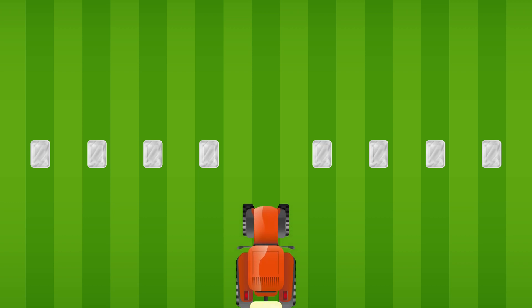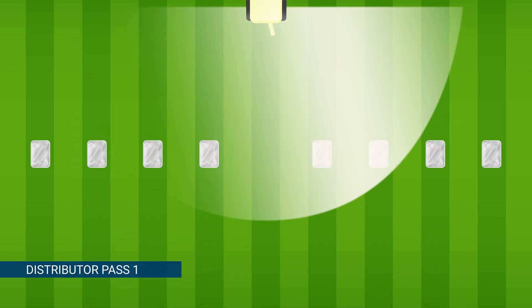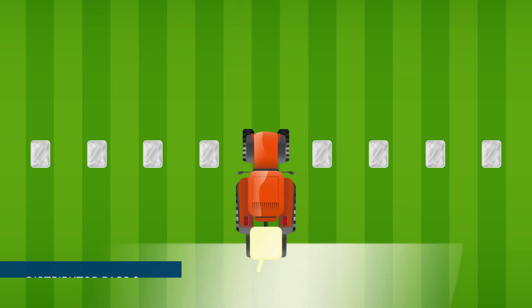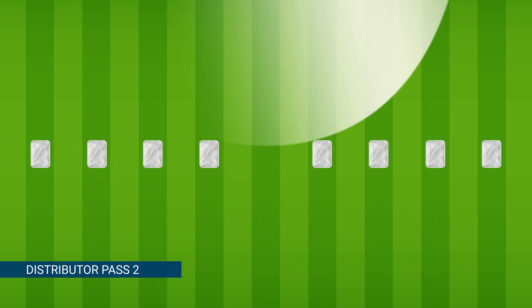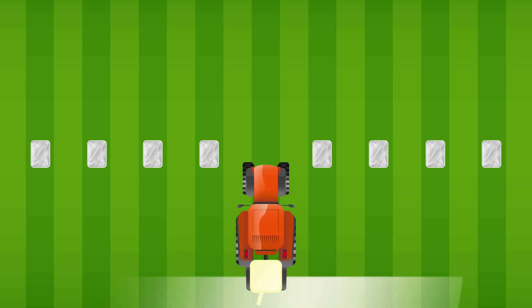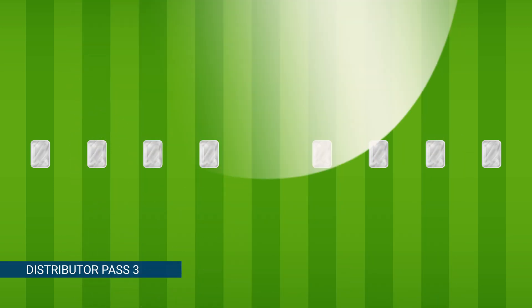Operate the distributor at the walking speed you intend to carry out the operation and make sure you continue traveling forwards until no fertilizer is reaching the catch trays either side of you. This is important as fertilizer is thrown both forwards and sideways. Repeat this a number of times so that you can collect sufficient fertilizer in the trays to make weighing easier, but note how many passes you make through the trays.